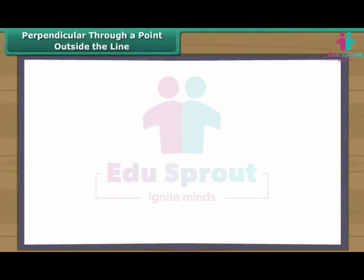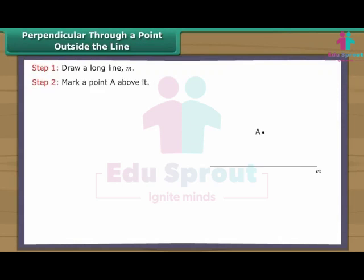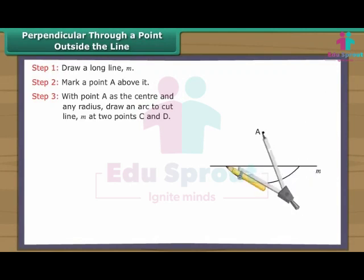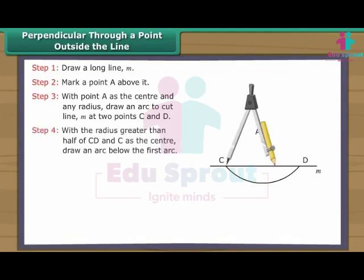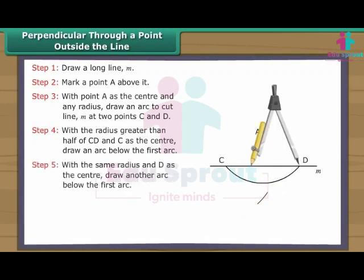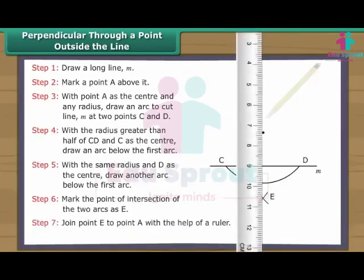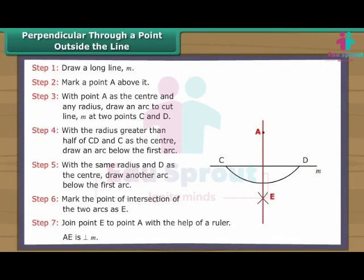Perpendicular through a point outside the line. Draw a long line M. Mark a point A above it. With point A as the centre and any radius, draw an arc to cut line M at two points C and D. With a radius greater than half of CD and C as the centre, draw an arc below the first arc. With the same radius and D as the centre, draw another arc below the first arc. Mark the point of intersection of the two arcs as E. Join point E to point A with the help of a ruler. AE is perpendicular to line M.